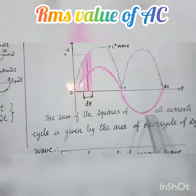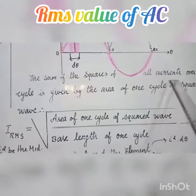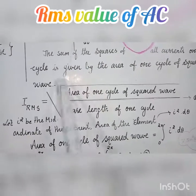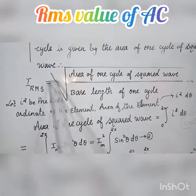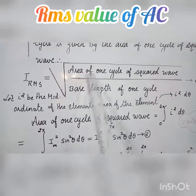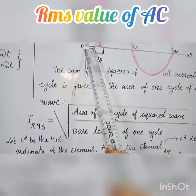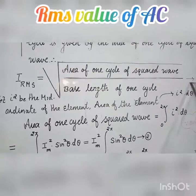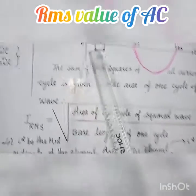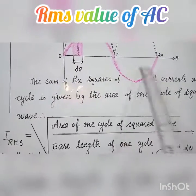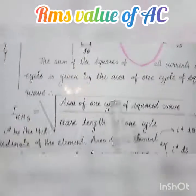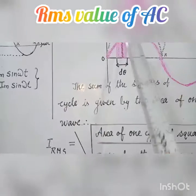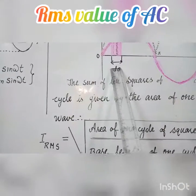The sum of the squares of all the currents over one cycle is given by the area of one cycle of the squared waveform. Therefore, I_RMS equals the square root of the area of one cycle of the squared waveform divided by the base length of one cycle. This is one half of the cycle, and another half of the cycle — the full cycle is the base. The elementary area has thickness dθ.